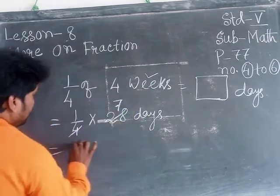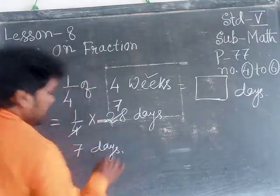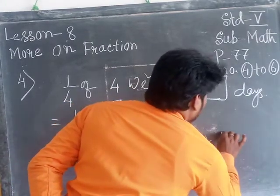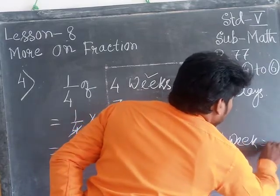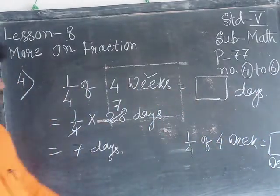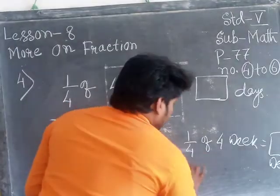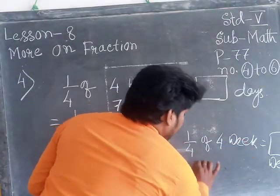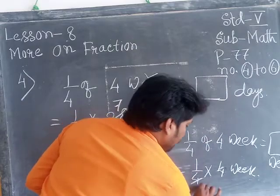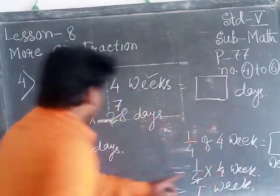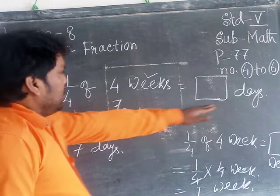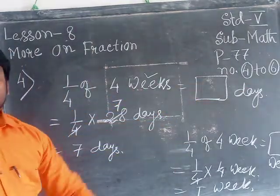If the problem is one-fourth of four weeks and the answer will be asked in weeks, then there will be no need to change weeks into days. The unit remains unchanged. One-fourth into four weeks, your answer will be in weeks: one week. One week means seven days. So if the answer is in days, at first week is converted to days.